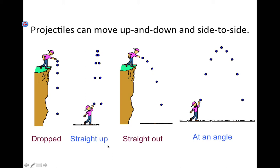As stated before, projectiles move both up and down and side to side, potentially. Up and down motion we'll term as vertical motion. Side to side motion we'll term as horizontal motion.